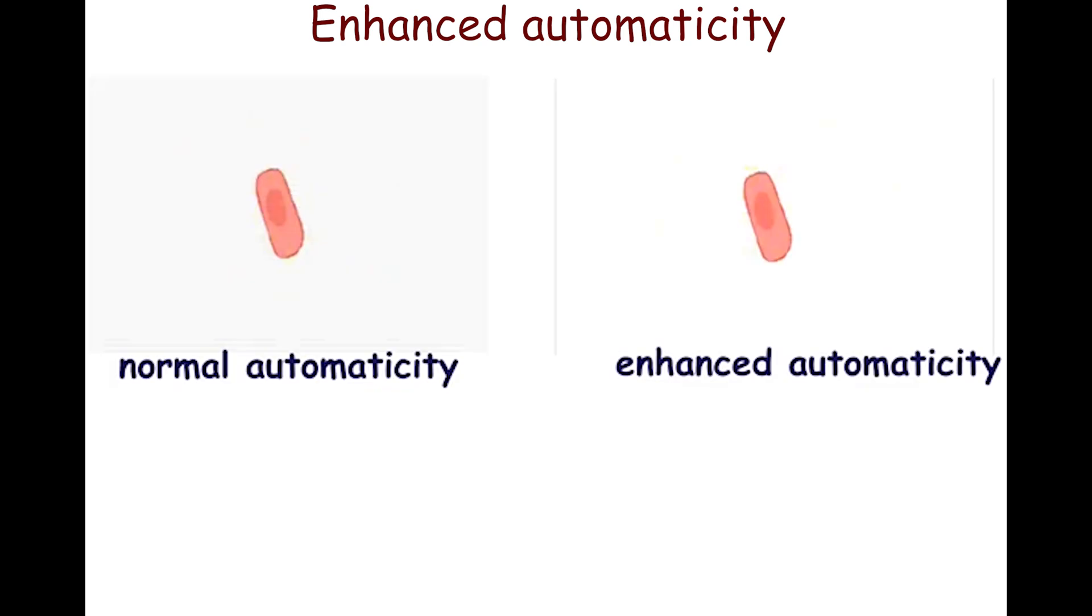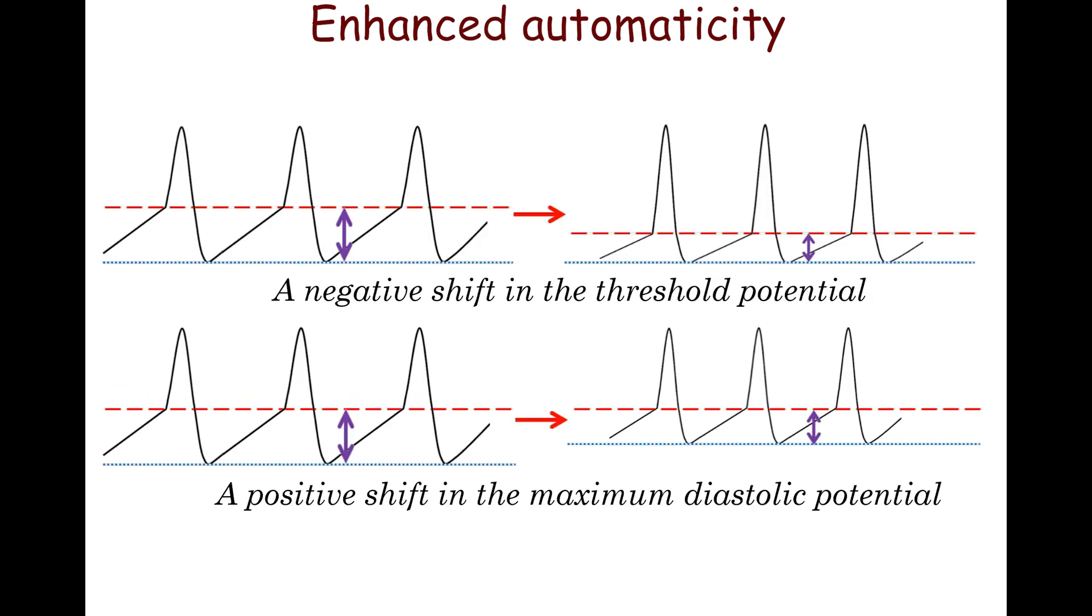Enhanced automaticity is a phenomenon in which certain cardiac structures depolarize faster than usual. This may occur due to a negative shift in the threshold potential or a positive shift in the maximum diastolic potential. Enhanced automaticity may result from increased sympathetic tone, ischemia, electrolyte disturbances, or certain drugs.